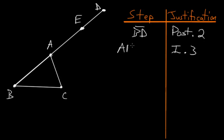So now we know that line AE is equal to the line AC. And then using postulate number one, we can connect the points E and C.